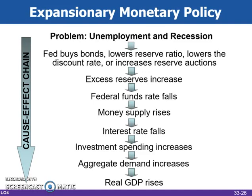This chain illustrates the causes and effects of expansionary monetary policy. When faced with the problems of unemployment and recession, the Fed takes actions to increase the money supply, which should eventually lead to real GDP rising. Unfortunately, it is not an immediate reaction, so the Fed may overshoot the mark, which can lead to high inflation.